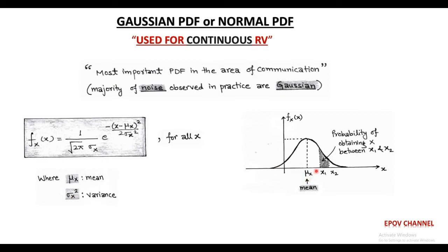Now, in order to determine the probability of occurrence of random variable X between any two real values x1 and x2, we have to find the area under the curve within limits x1 and x2, as shown by the shaded area. So, with the help of Gaussian PDF, we can analyze the noise performance in a communication system.